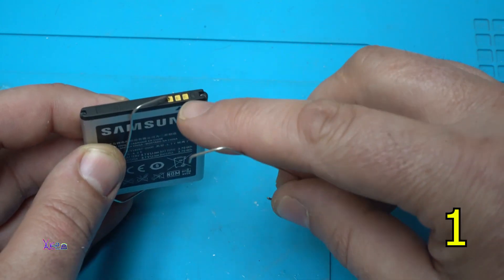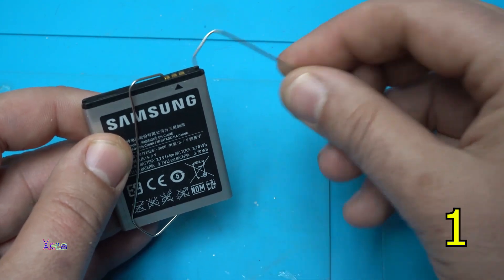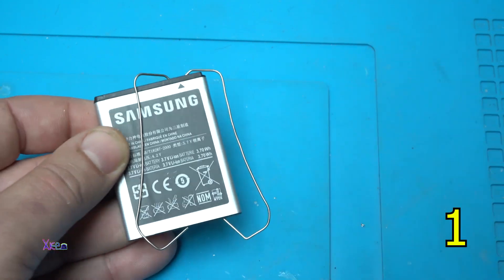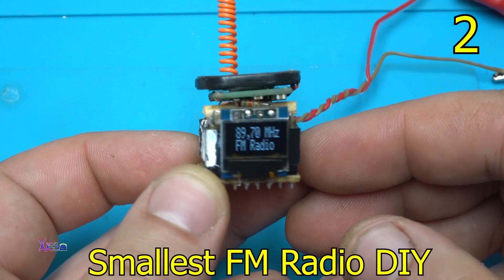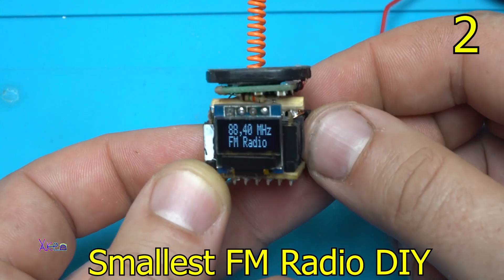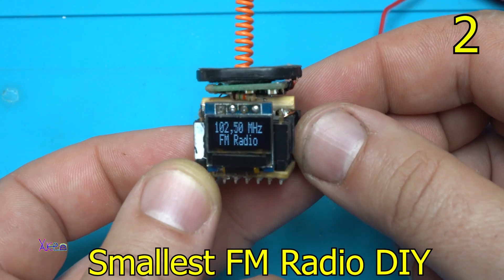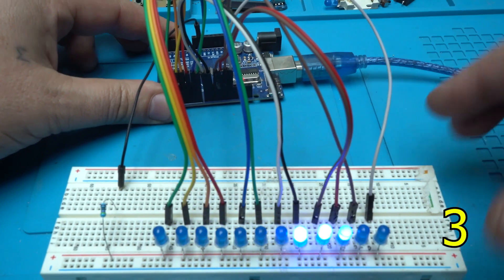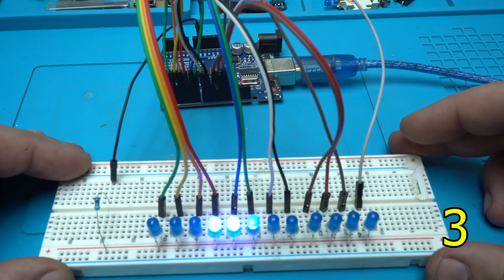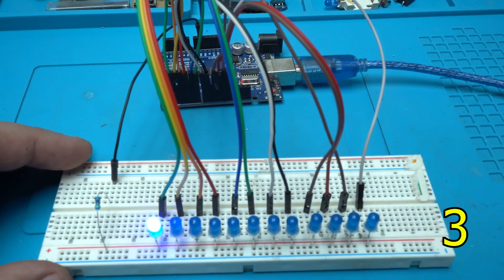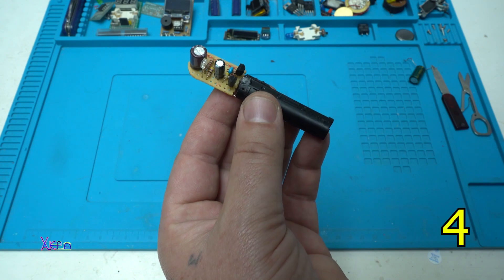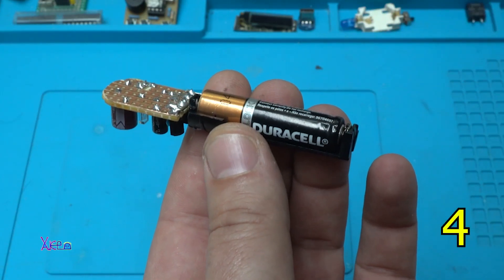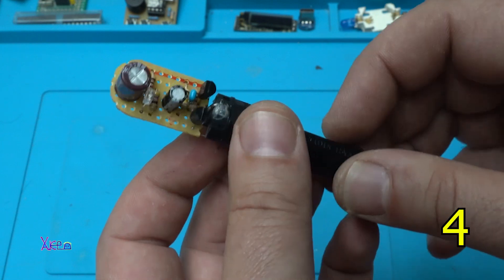The second one is going to the positive terminal like this. This is the smallest homemade radio with OLED screen. Let's power up. Take a look at that LED blinker that works with only one triple-A 1.5 volt battery.